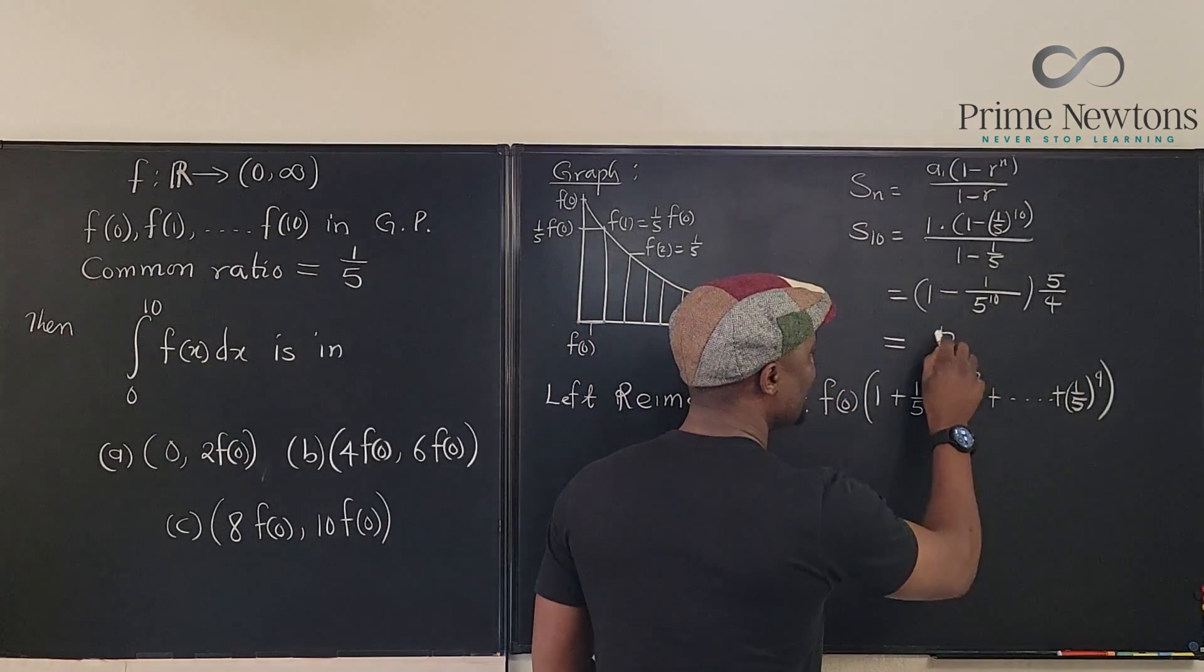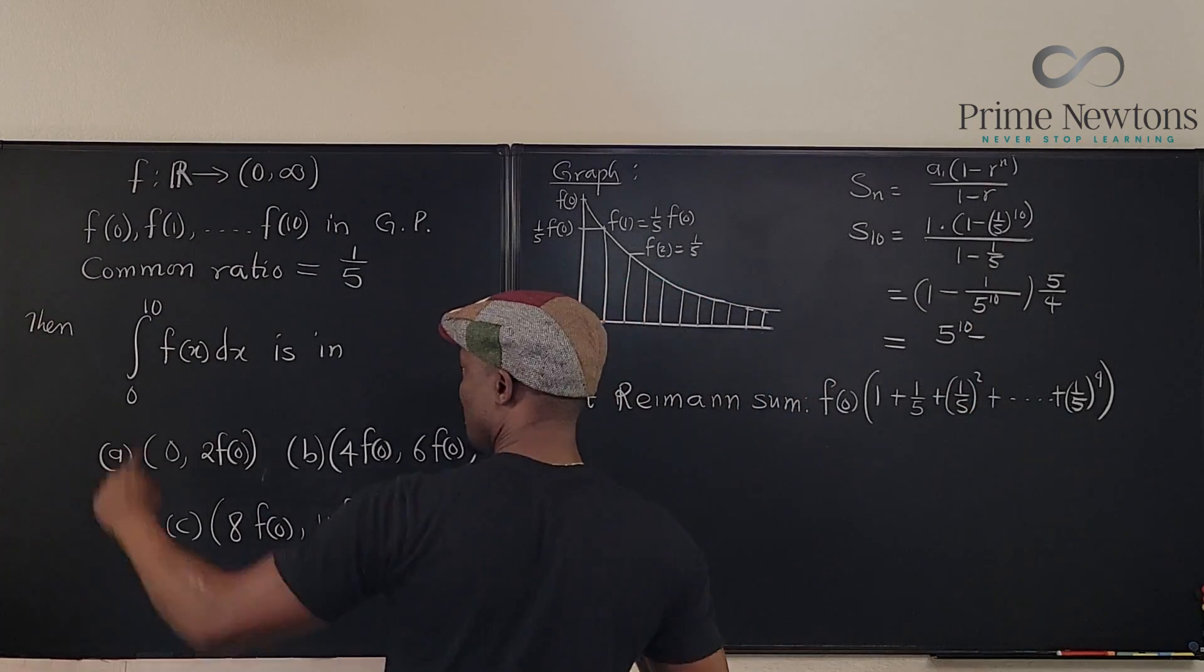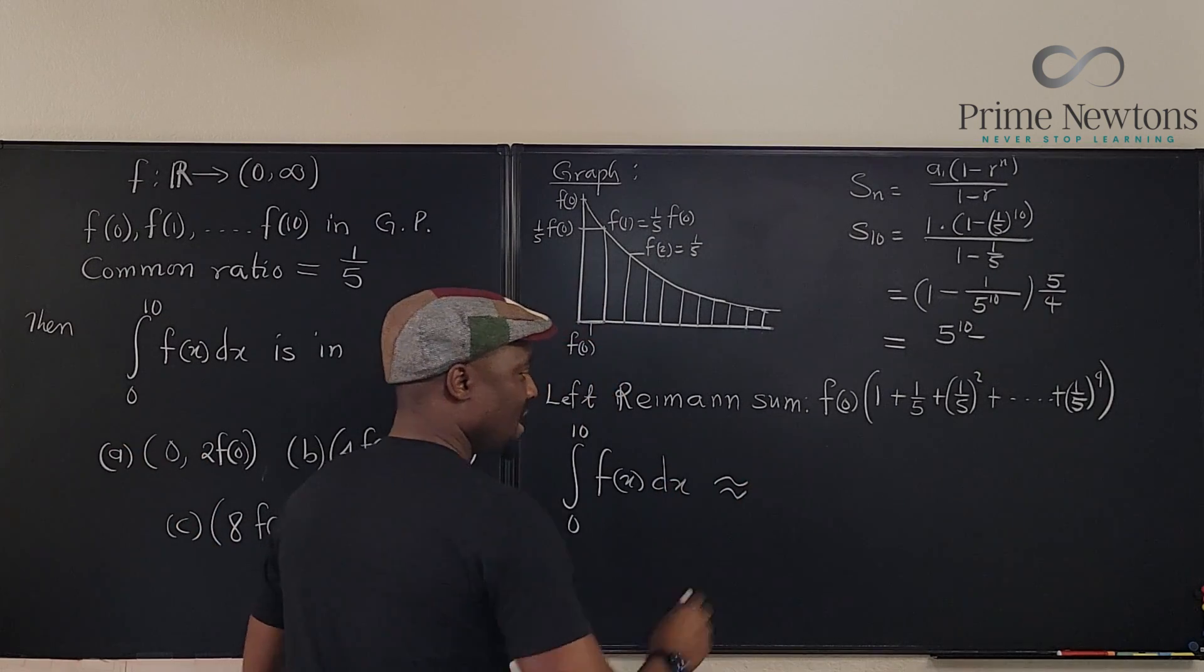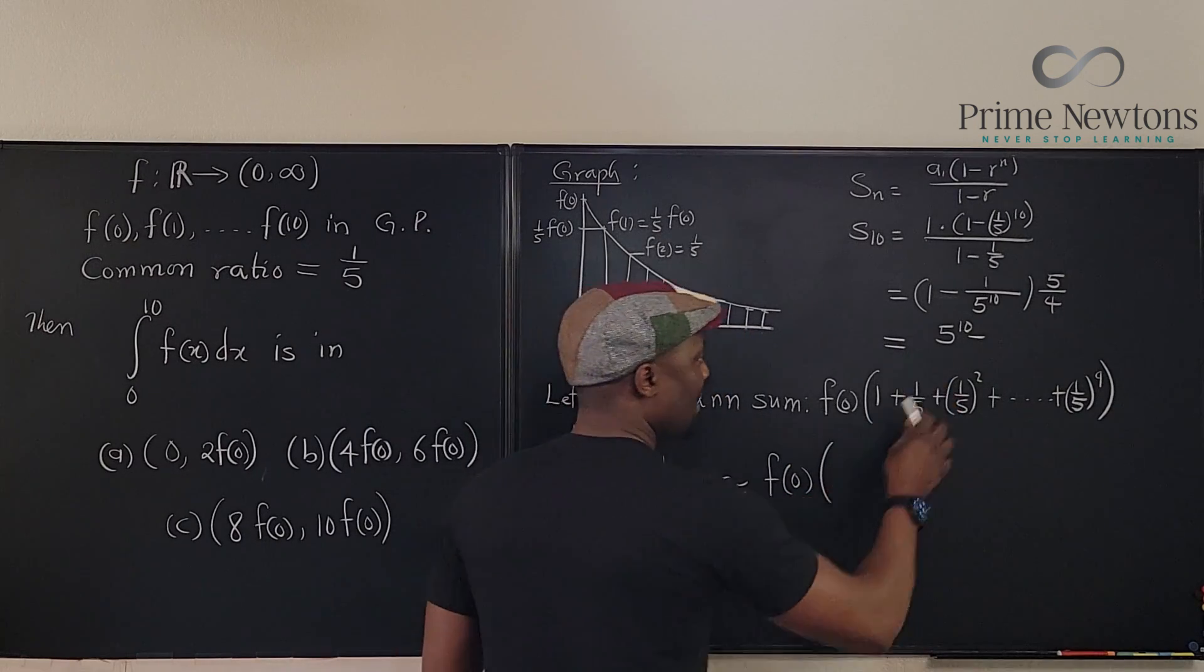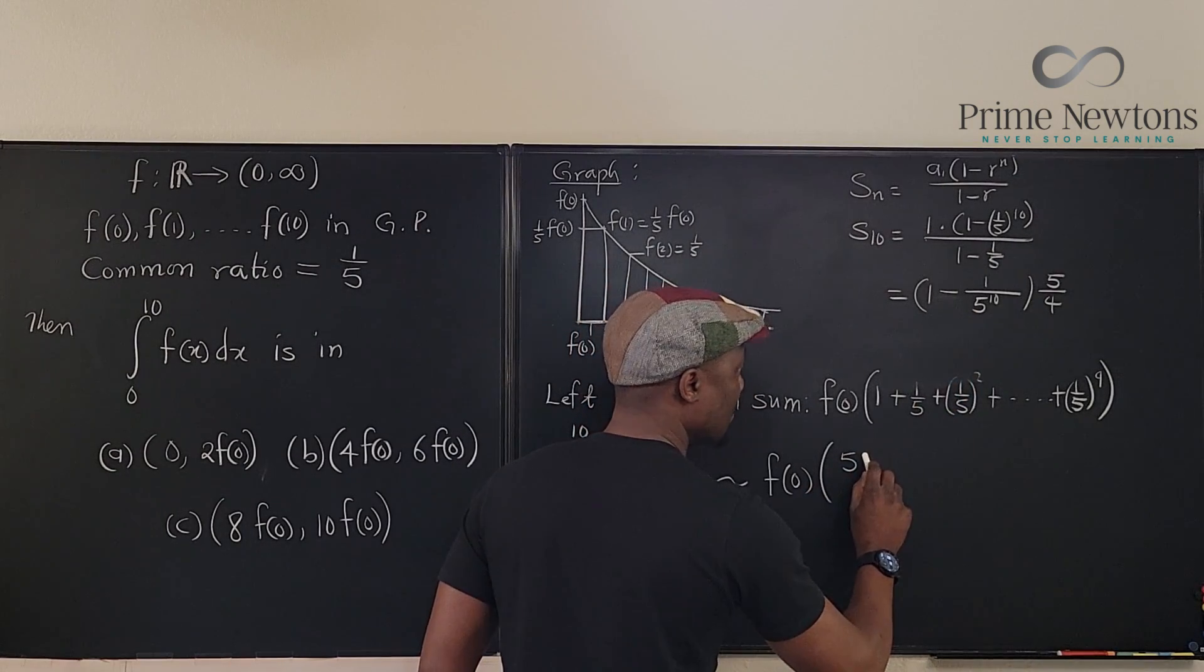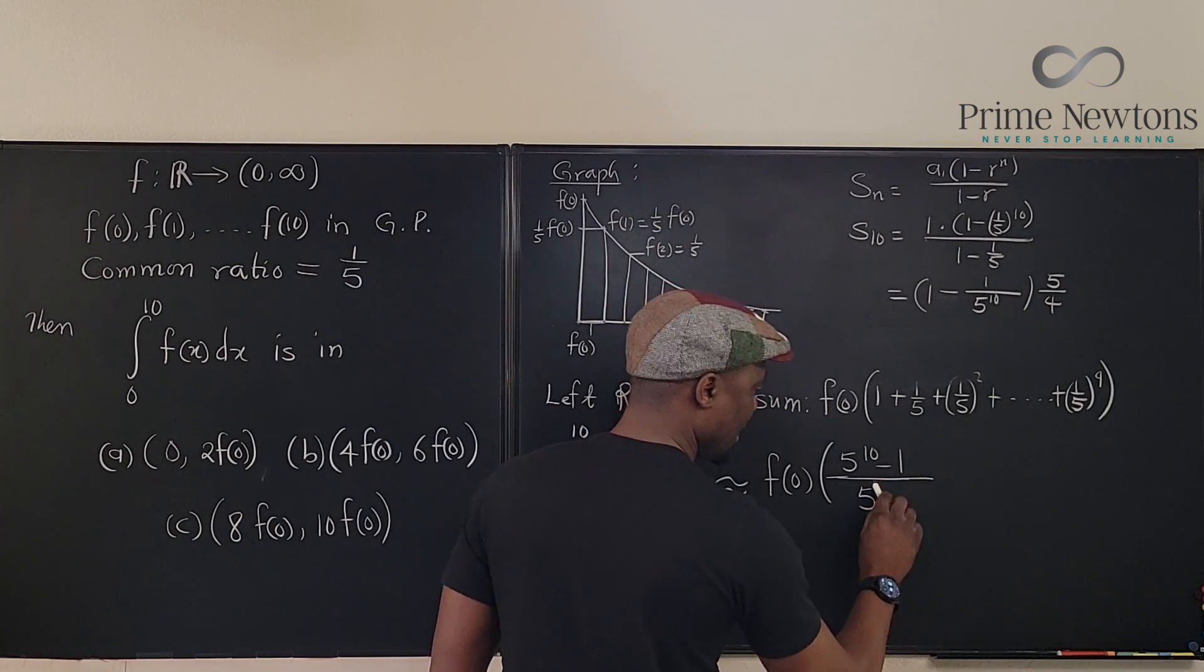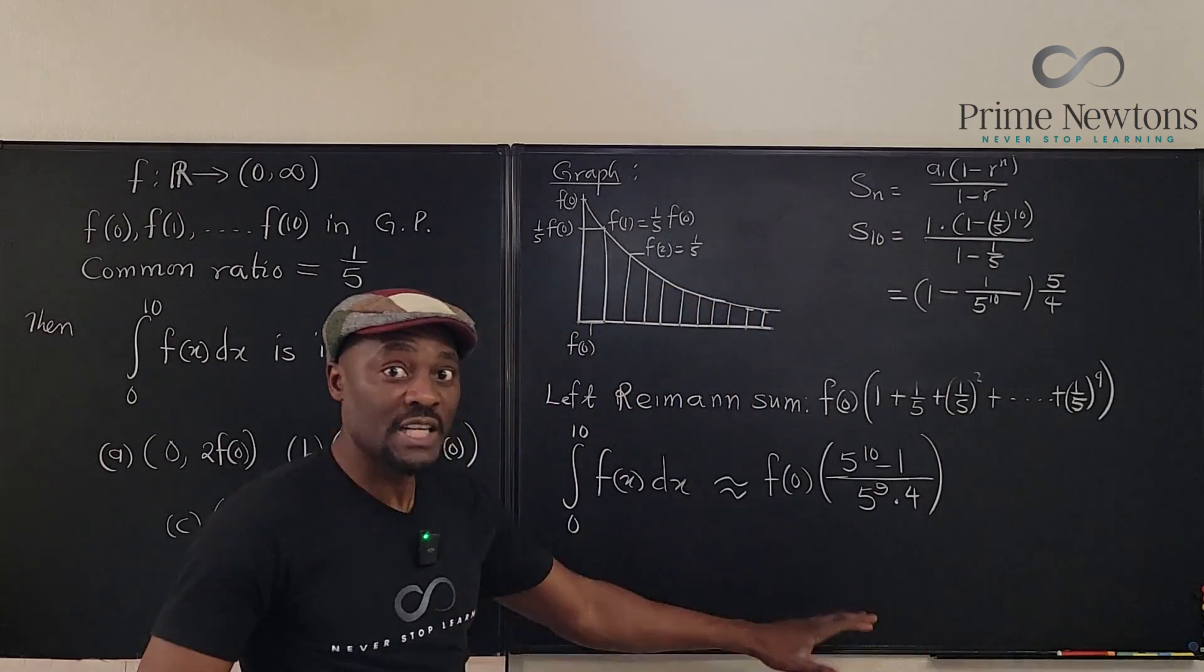You see, 1 - (1/5)^10 can be written as (5^10 - 1)/5^10. But this is going to cancel one of these, and then there's going to be a four and you just do the math. What you're going to see is: this becomes 5^10 minus—let's write it here. So this integral from 0 to 10 of f(x)dx is approximately equal to f(0) multiplied by this sum. Let's clean it up here. It's going to be (5^10 - 1)/(5^9) multiplied by 4.